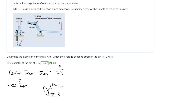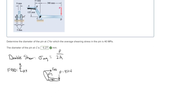We have a force P pushing down at point D, and they tell us that P is equal to 950 newtons. What we need to do first is take a moment about point C so that we can get the force FAB. So the sum of moments at point C equals zero. We have all our distances on the picture, and I'm going to convert them all to meters to keep everything in newtons and meters.